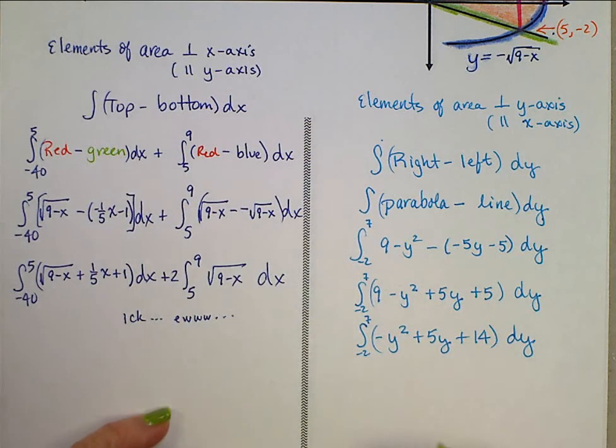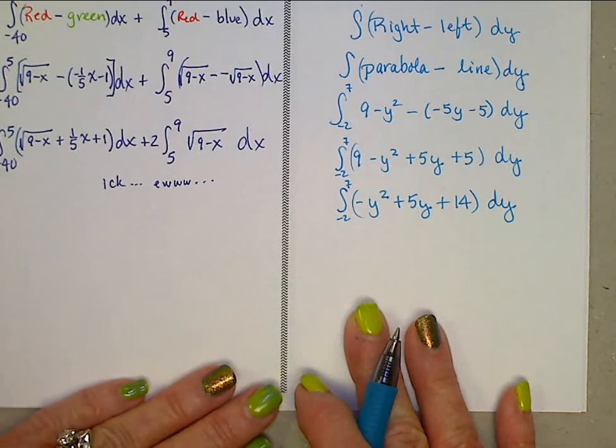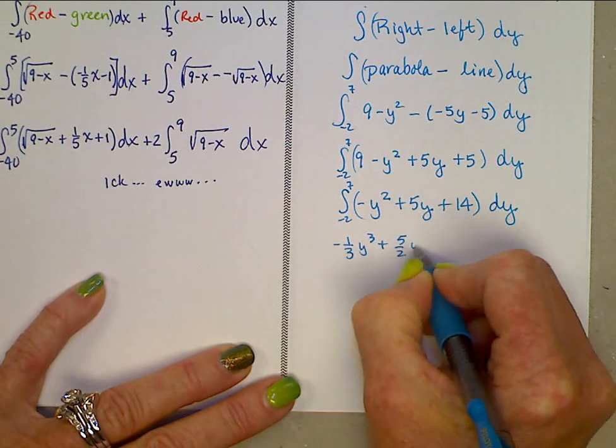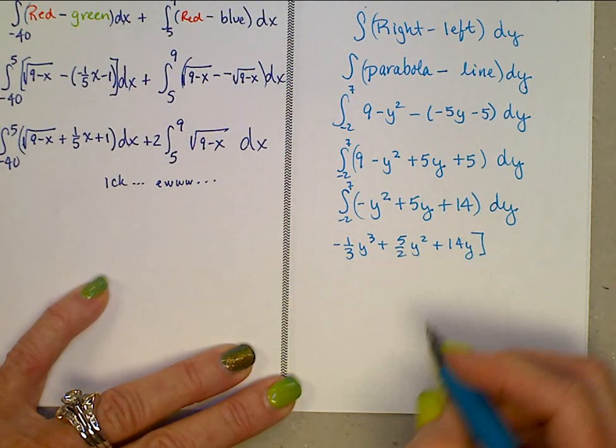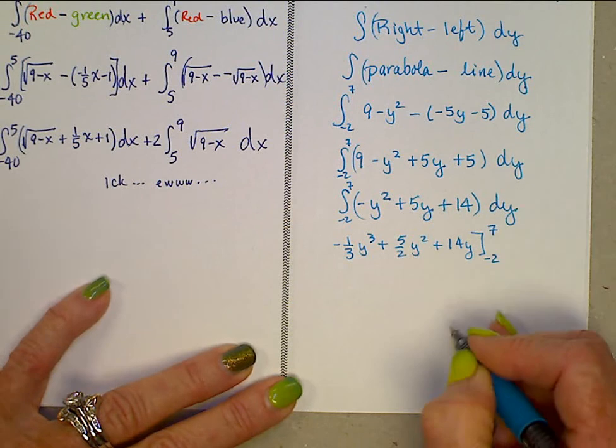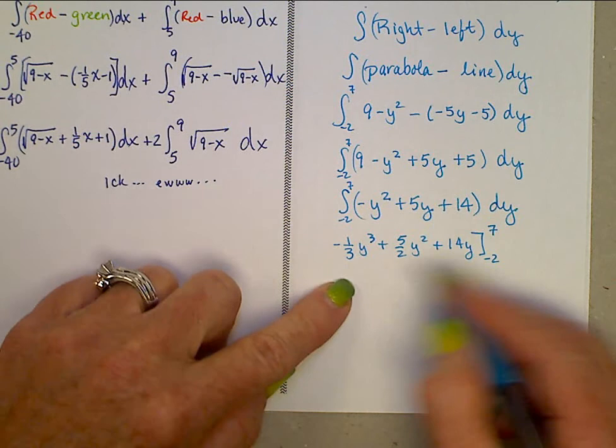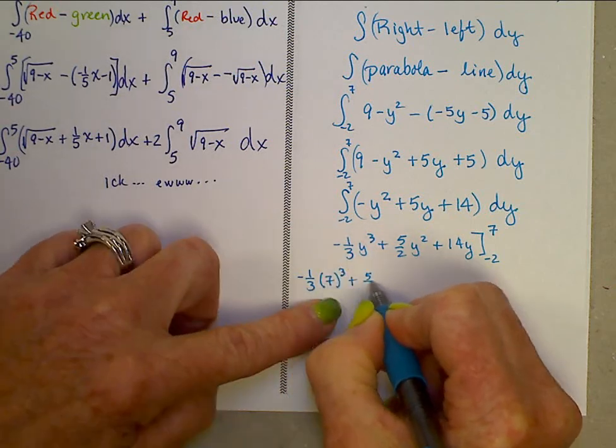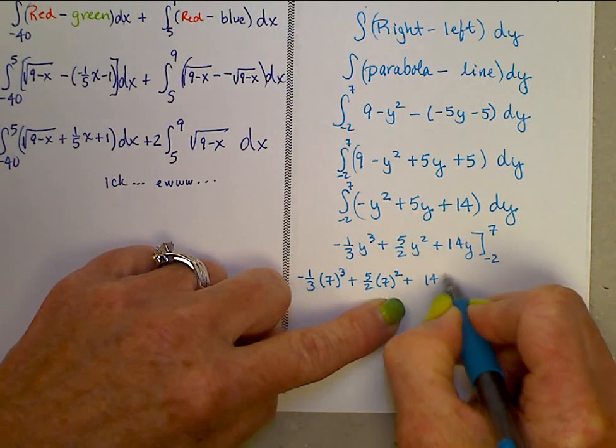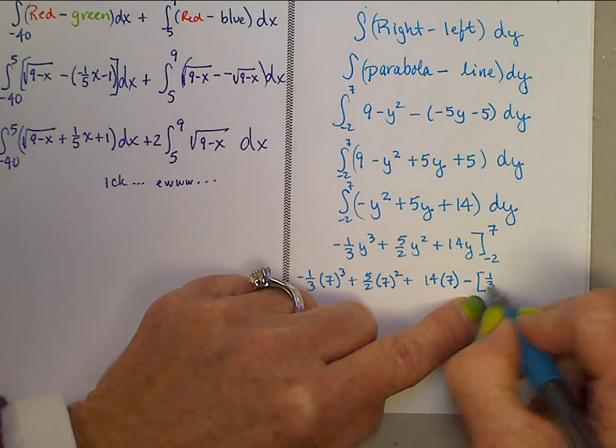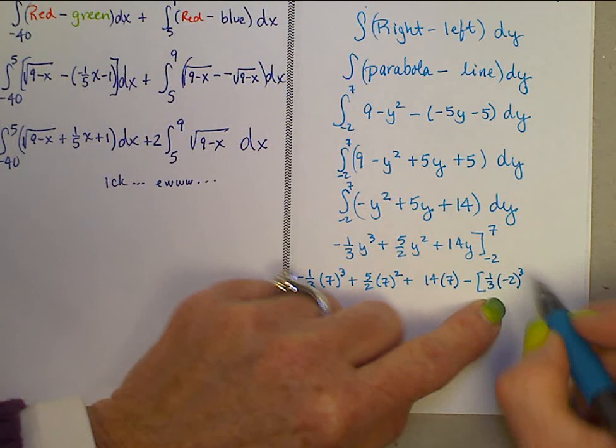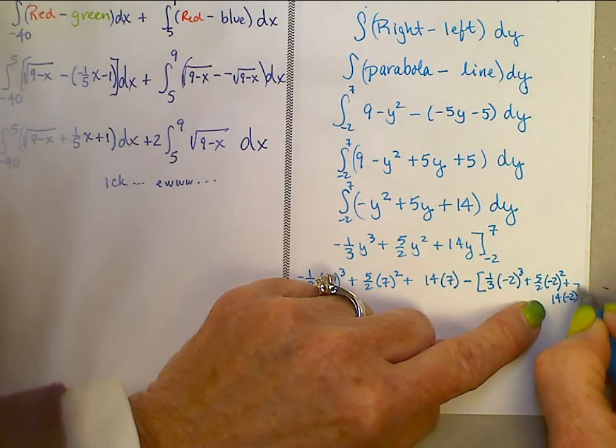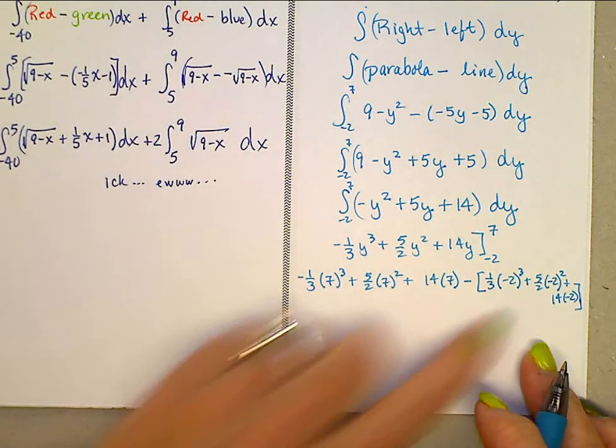Should I take you through the fractions or do you think you can handle it on your own? If you want to be done, you're done. Otherwise, I'm going to go through because I think it's fun and I'm going to work through this by hand. This is negative one-third y cubed plus five-halves y squared plus 14y. We're going to evaluate this from negative 2 to 7.